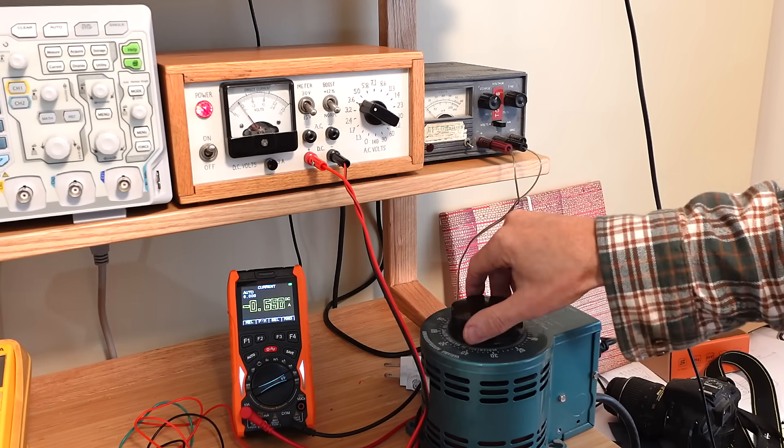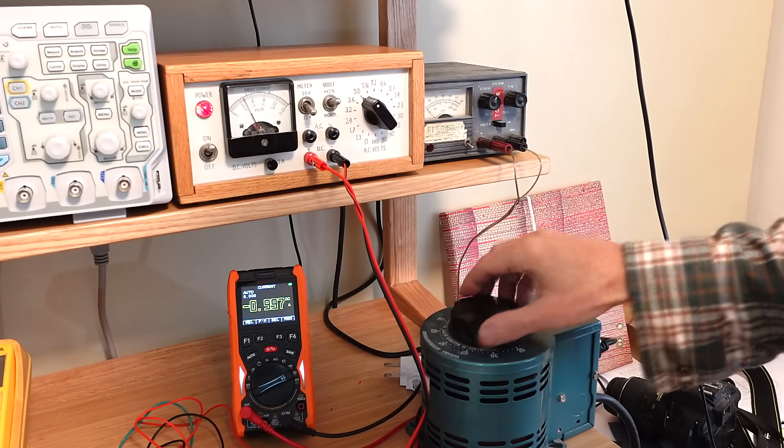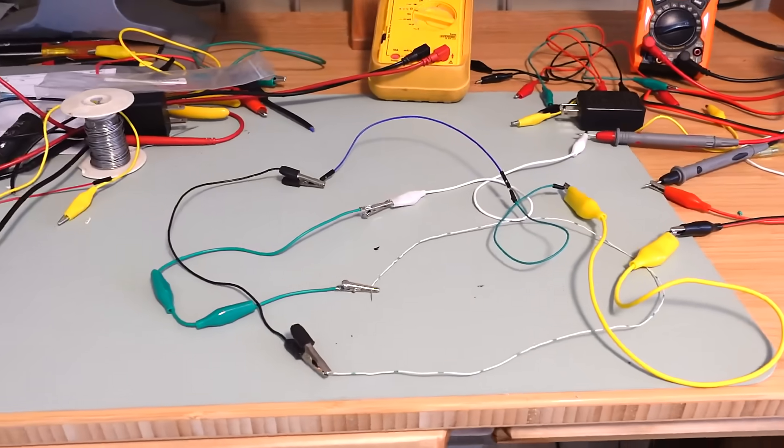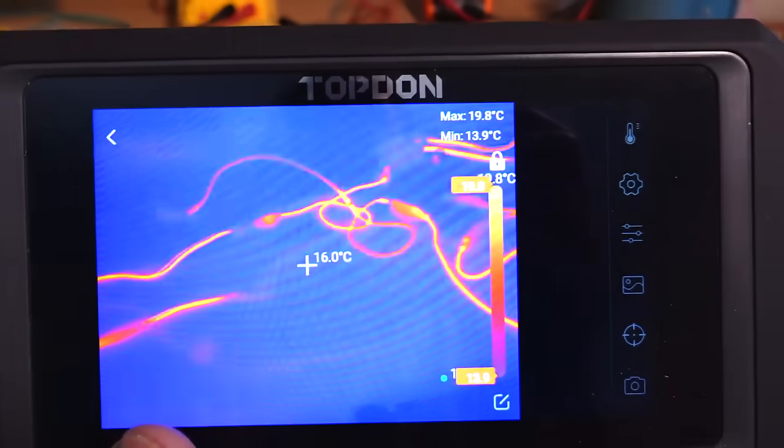This power supply is unregulated so I'm just gonna use a Variac to tweak the current to 1 ampere. So, I just gave that a minute and let's look at it in infrared.